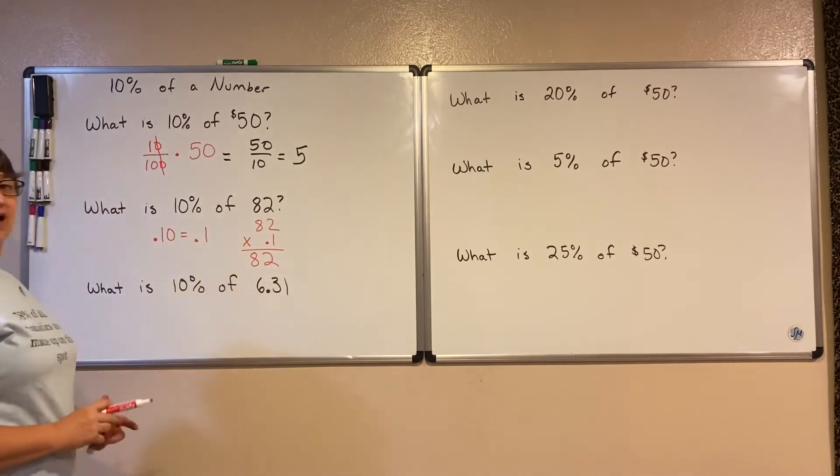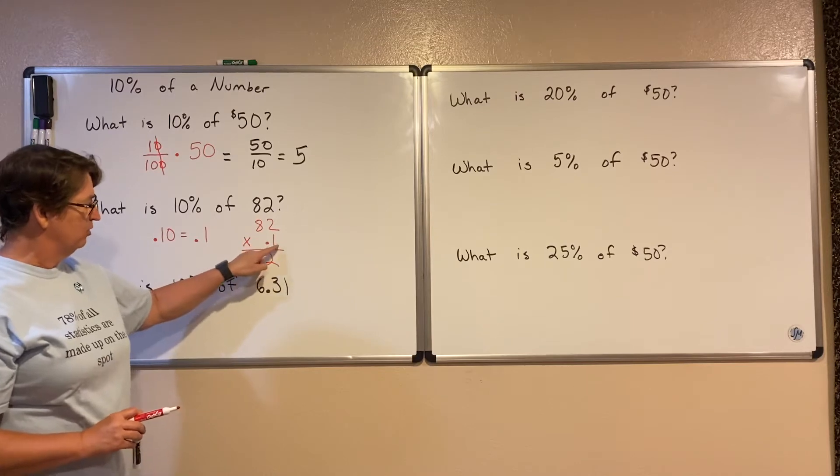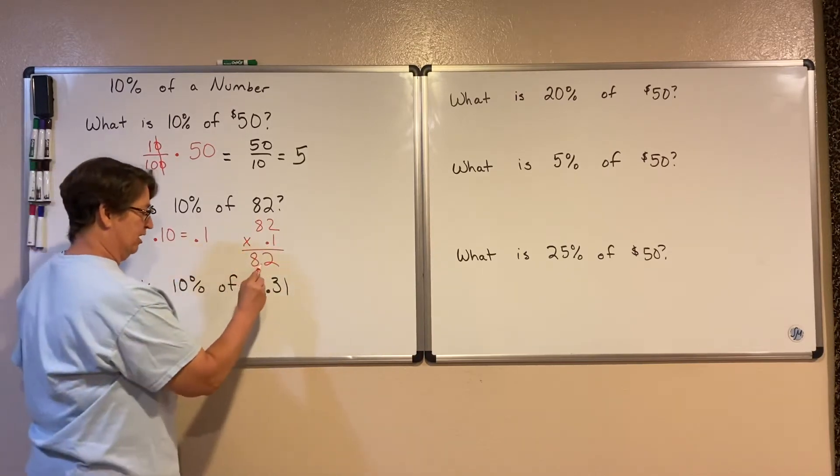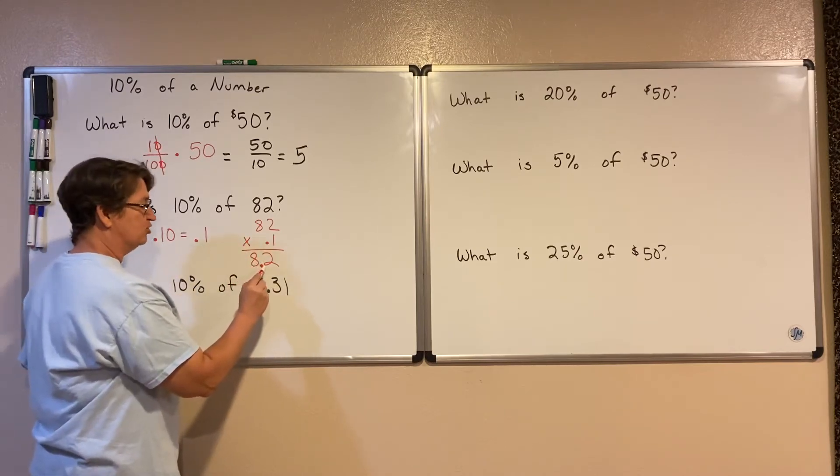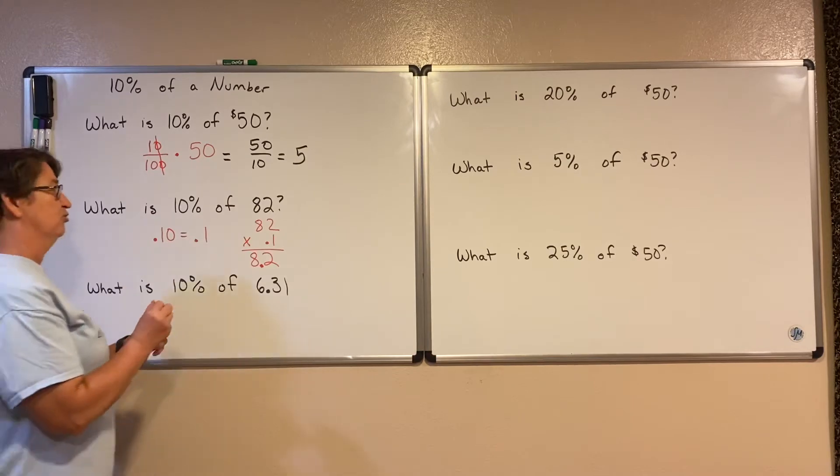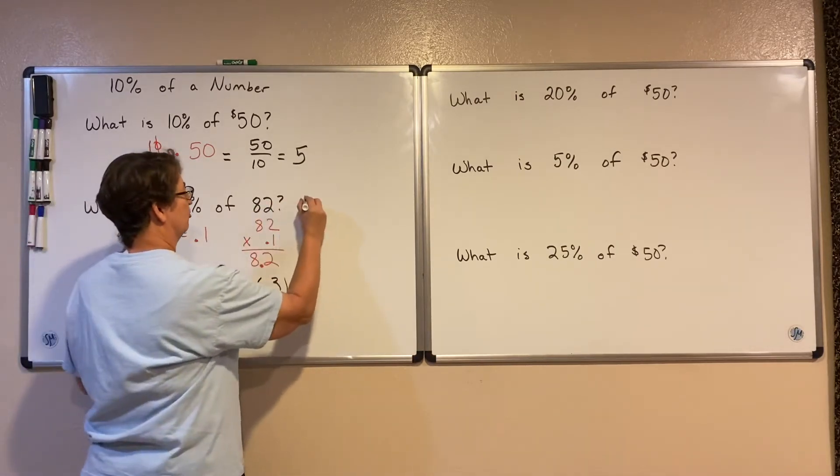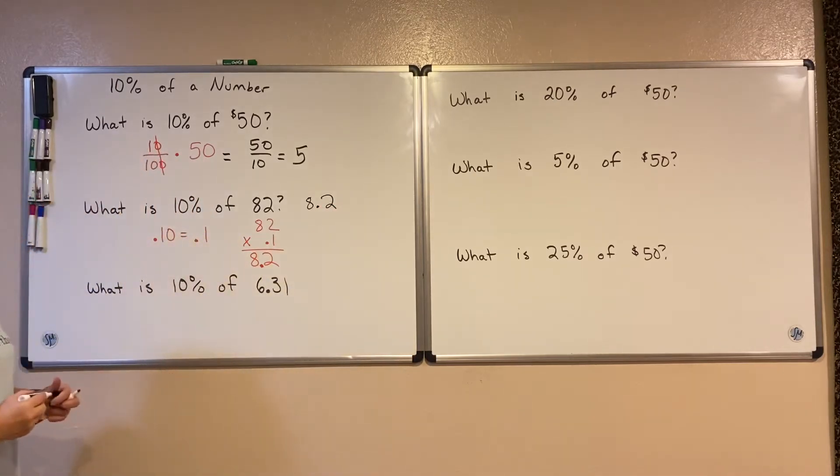After I'm done multiplying, then I check on the decimals. There's one number behind the decimal. So in my answer, I'm going to have one number behind my decimal. So 8 and 2 tenths is 10% of that 82. So this is equal to 8 and 2 tenths, 8.2.